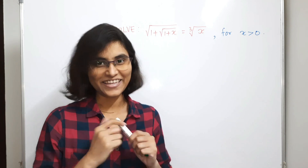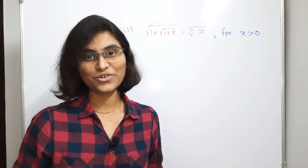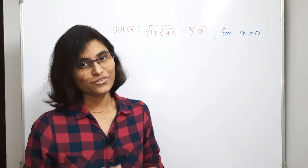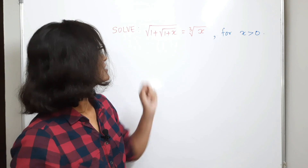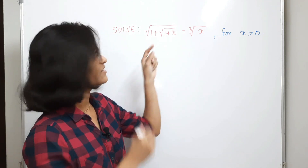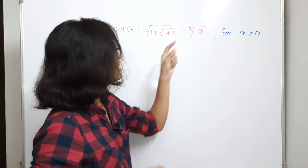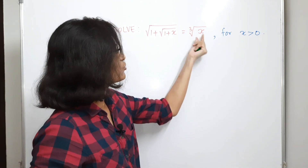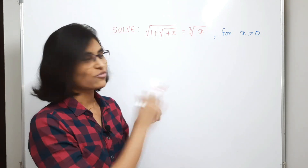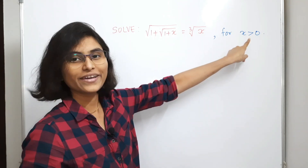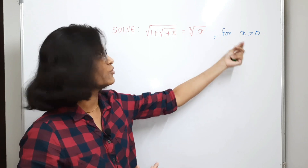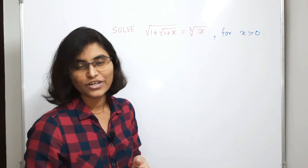Hey everyone, this is Saili and welcome back to another interesting video. Here we have a question: the square root of 1 plus the square root of 1 plus x is equal to the cube root of x, and we have to solve this for the value of x greater than 0, that means for positive values of x.